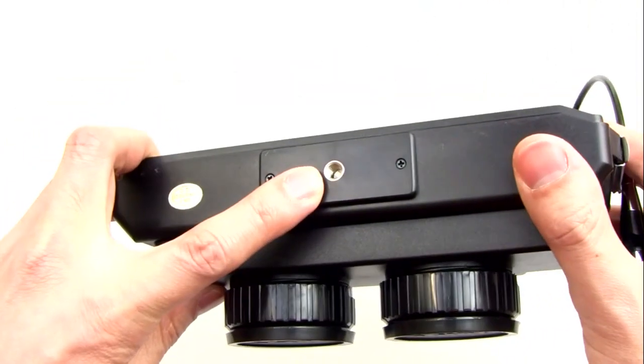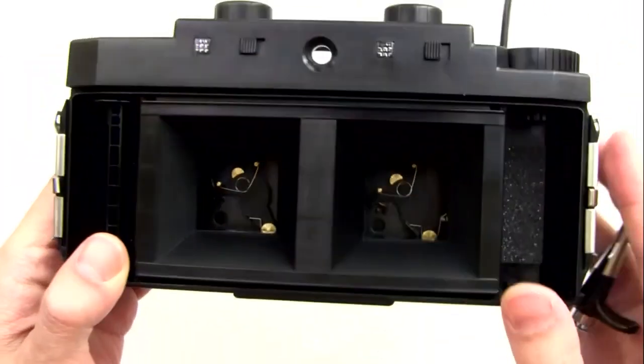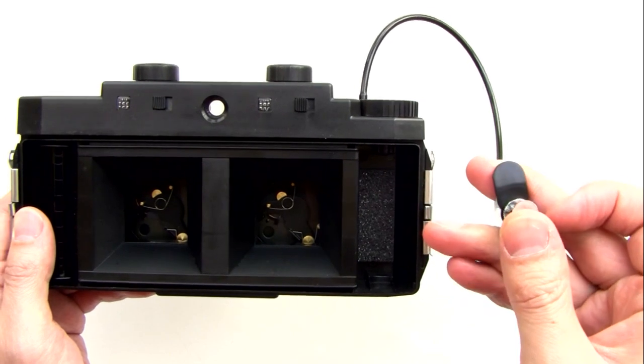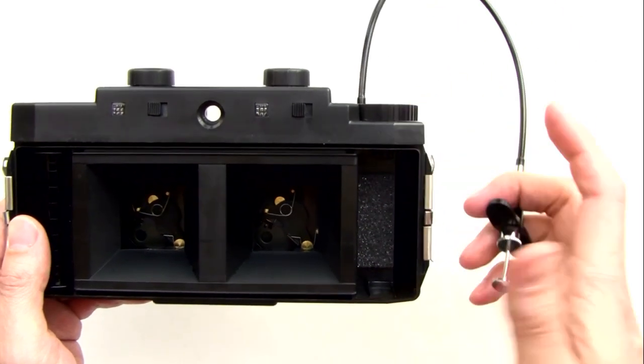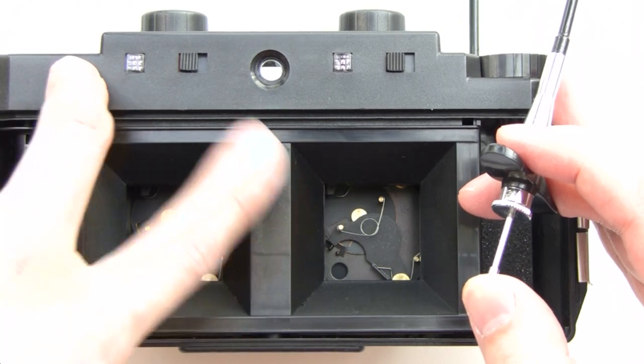screw your camera down into a tripod to get a very stable mounting, and then you can engage the shutter without touching the camera itself. I have this side set to bulb mode and this side set to normal.